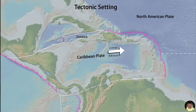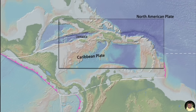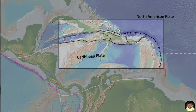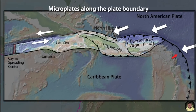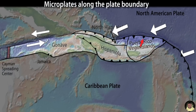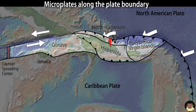In this region, the Caribbean Plate is broken into at least four microplates as the North American-Caribbean Plate boundary changes from frontal subduction at the Lesser Antilles Trench, to oblique subduction at the Puerto Rico Trench, to oblique collision at the Northern Hispaniola Trench, and finally to strike-slip in the Cayman Trough.